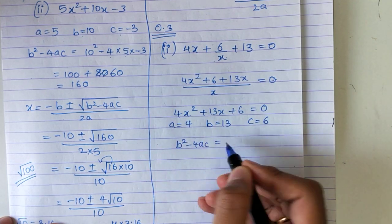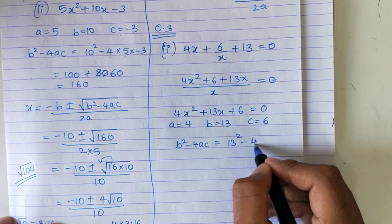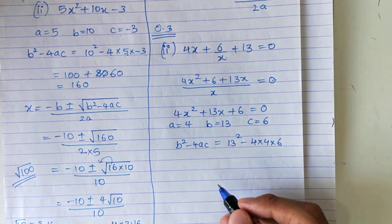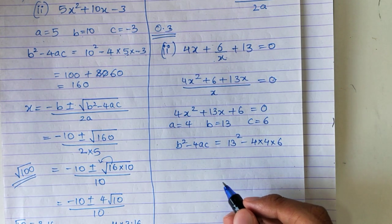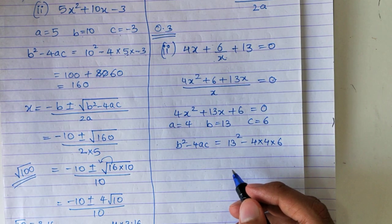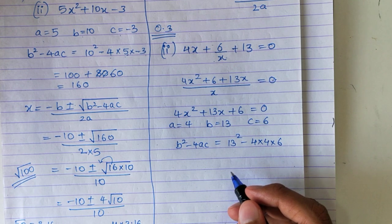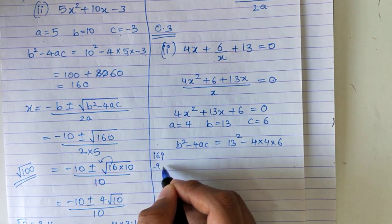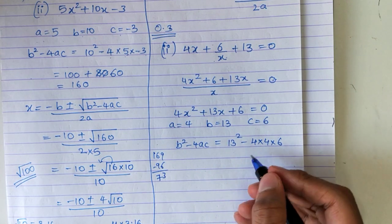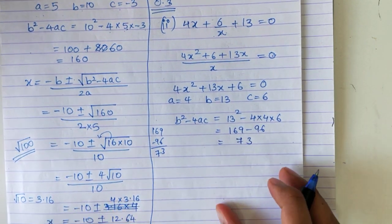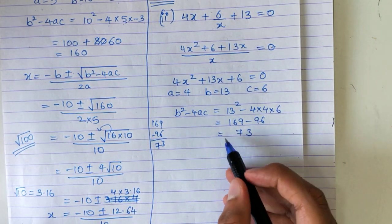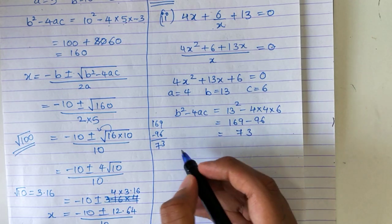We will find b squared minus 4ac: 13 squared minus 4 into 4 into 6 gives 169 minus 96, and I am getting the answer as 73. Now I will use the formula.